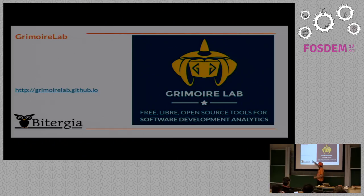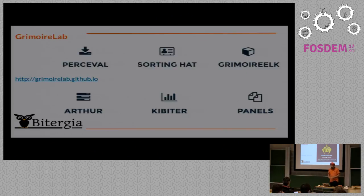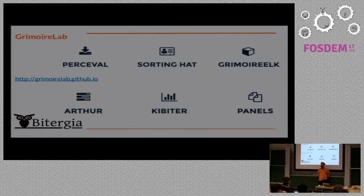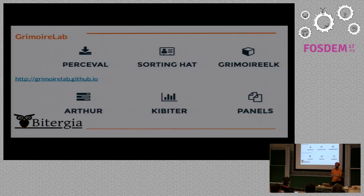You can find more information about GrimoireLab at grimoirelab.github.io, where you have access to all the components, all the source code, and some documentation. Most of the components are listed there. Perceval is the one retrieving information from repositories. Sortinghat is the one dealing with affiliation — it tries to store affiliation for every person and handles unique identities, meaning converting identities to persons, because people use different identities in different data sources.